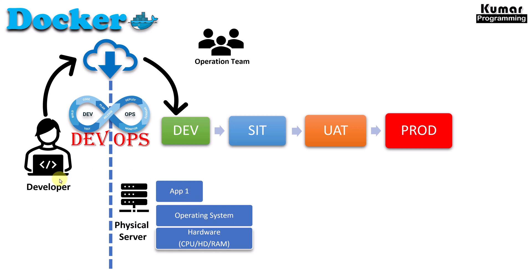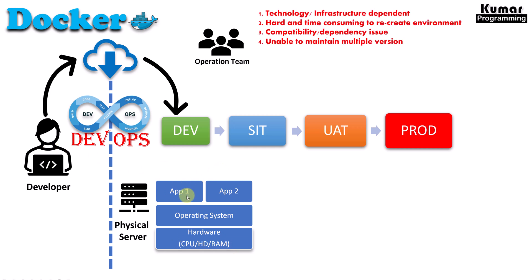Suppose we have another application API in the backend developed in .NET Core. That is also going to be deployed on the same operating system. The DevOps team is going to configure this complete infrastructure for all environments — dev, SIT, UAT, and prod. But there were some major problems. The application configured in this environment was technology dependent and infrastructure dependent. If tomorrow we move to a different operating system like Linux or Ubuntu, that application is not going to work. Also, it was quite hard and time consuming to recreate this infrastructure for all environments.